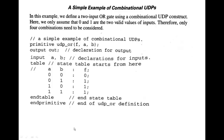Okay, let us see the example here. This is a combinational UDP for OR gate, two input OR gate. So in this example, the assumption is we only assume that 0 and 1 are the two valid values of inputs.